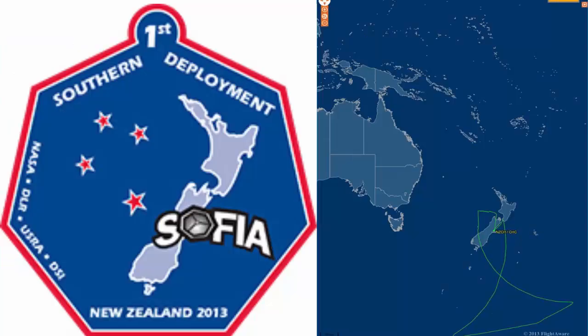Another advantage of an airplane is that it can fly to many different places. In 2013, SOFIA was sent to New Zealand to observe constellations in the southern sky. These are best viewed from the southern hemisphere. Ground-based telescopes can't move like SOFIA. SOFIA is able to go to specific places to observe events like eclipses and comets that could not be seen from other locations.